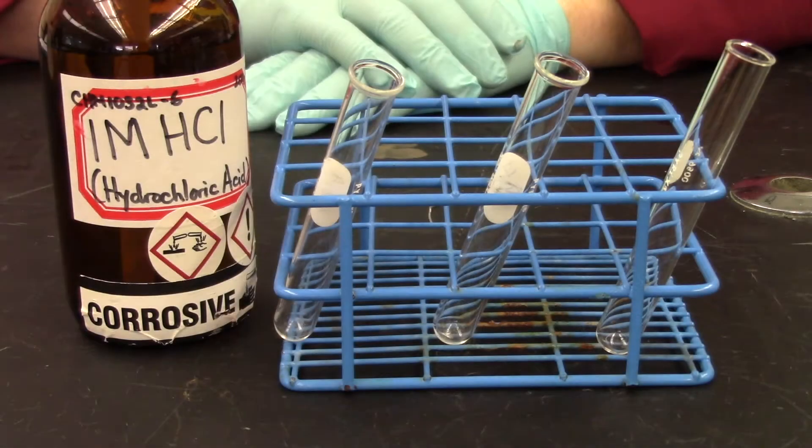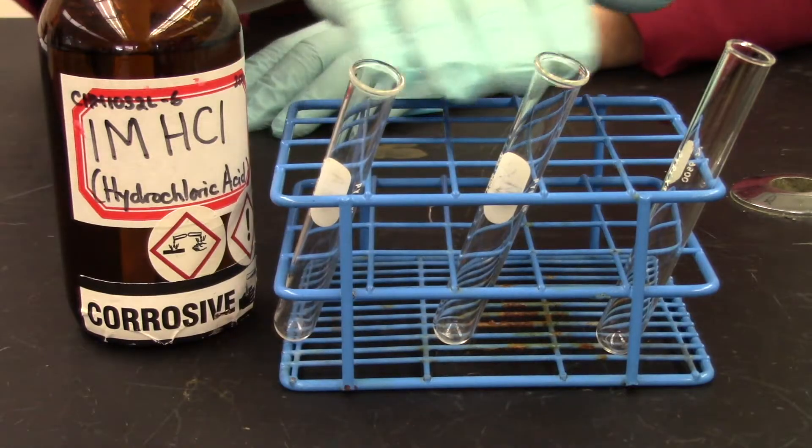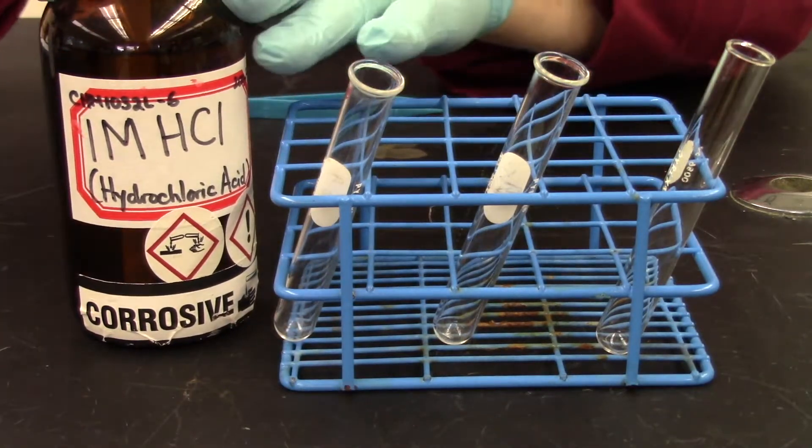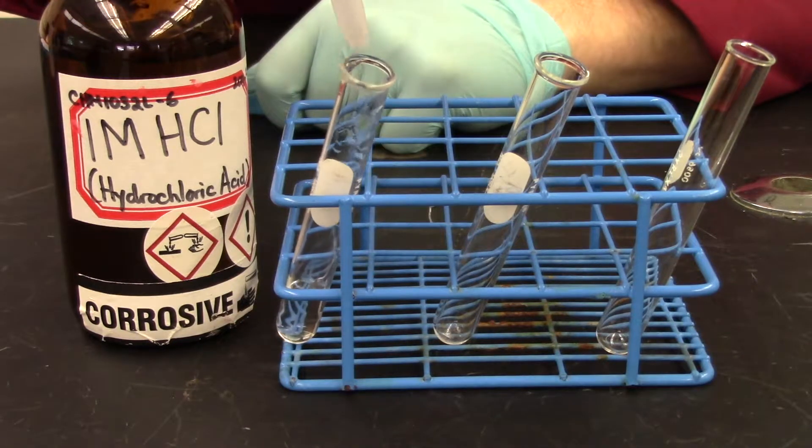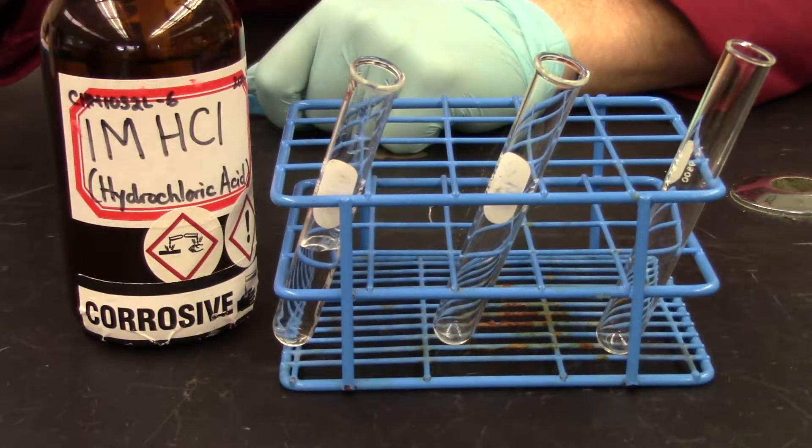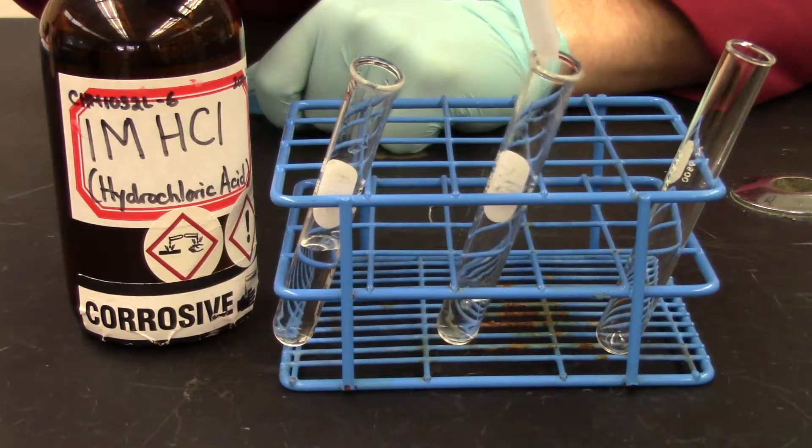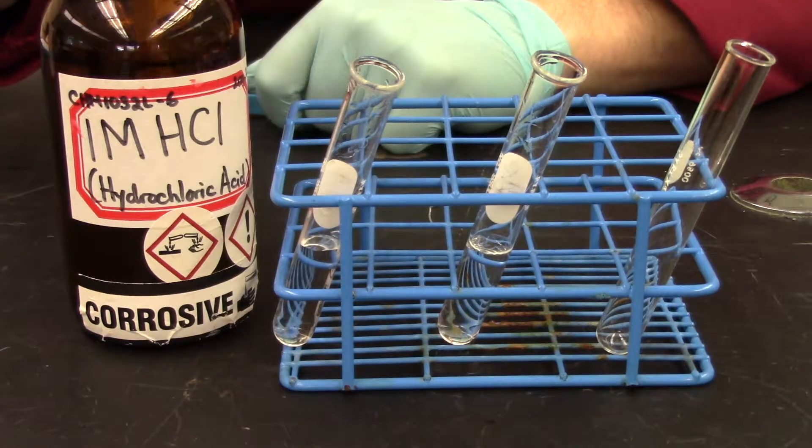In today's experiment, we'll be doing chemical reactions. Part one, reactions with metals. So what we're going to do is put some hydrochloric acid into each of these test tubes, about five milliliters. Now it doesn't have to be accurate. It's not critical that it's five milliliters precisely or accurately. Just enough to cover the piece of metal we're going to throw in there. So I'm just going to put in some acid.